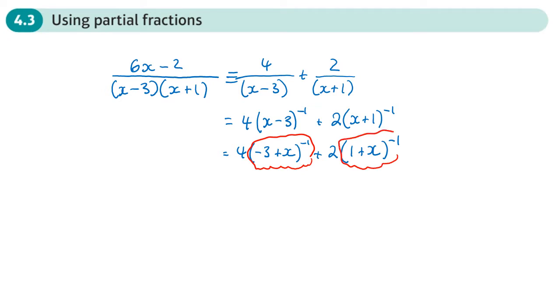The second term can be dealt with straight away because we have the one at the front. We replace n with negative one and wherever we see x in the expansion, we just put x there.